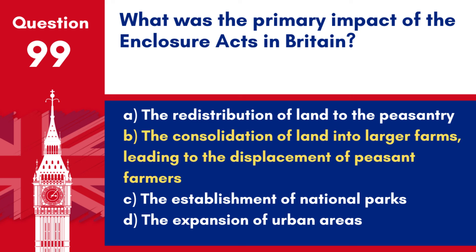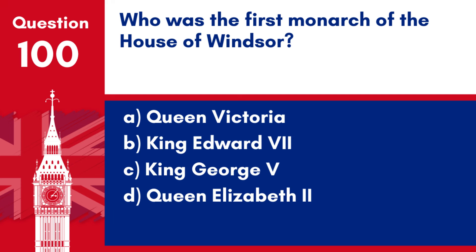Answer: b. The consolidation of land into larger farms, leading to the displacement of peasant farmers. The Enclosure Acts were a series of UK statutes that allowed for the appropriation of common lands into privately owned parcels, dramatically altering the landscape and social structure.